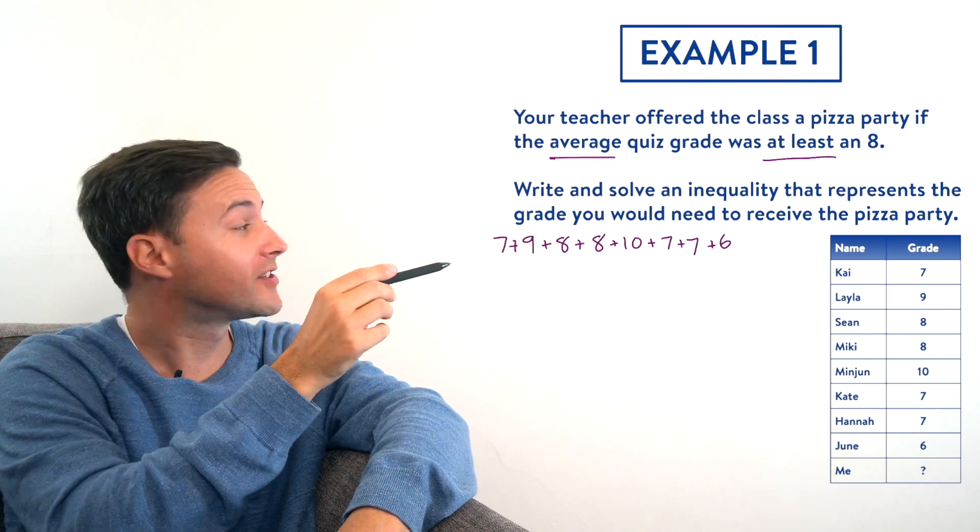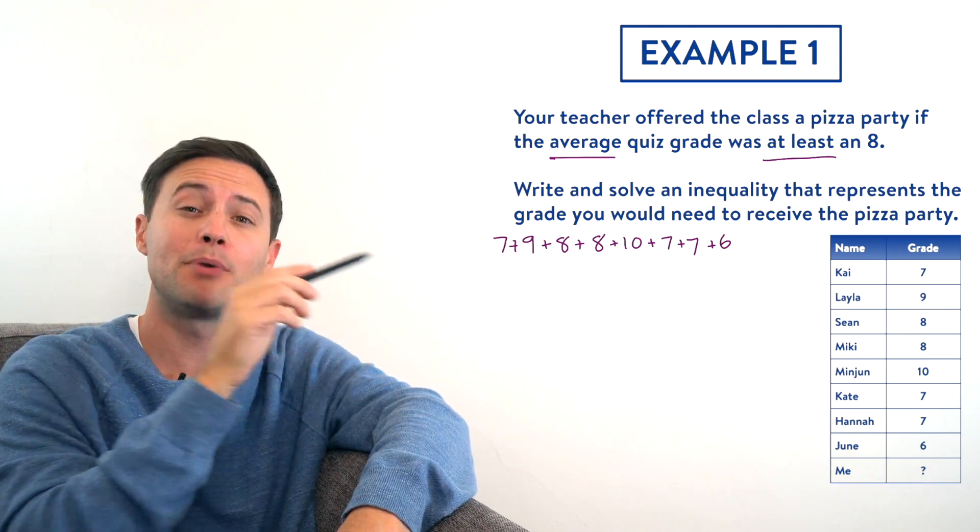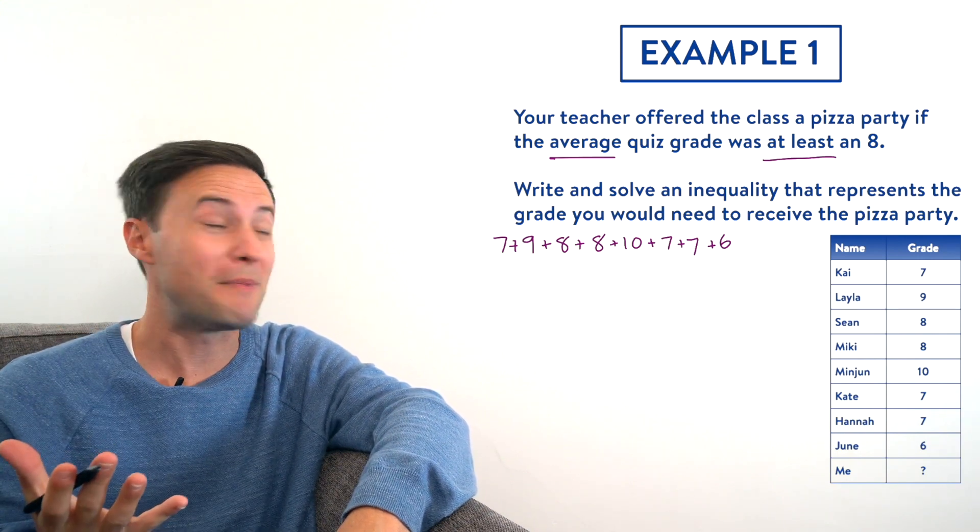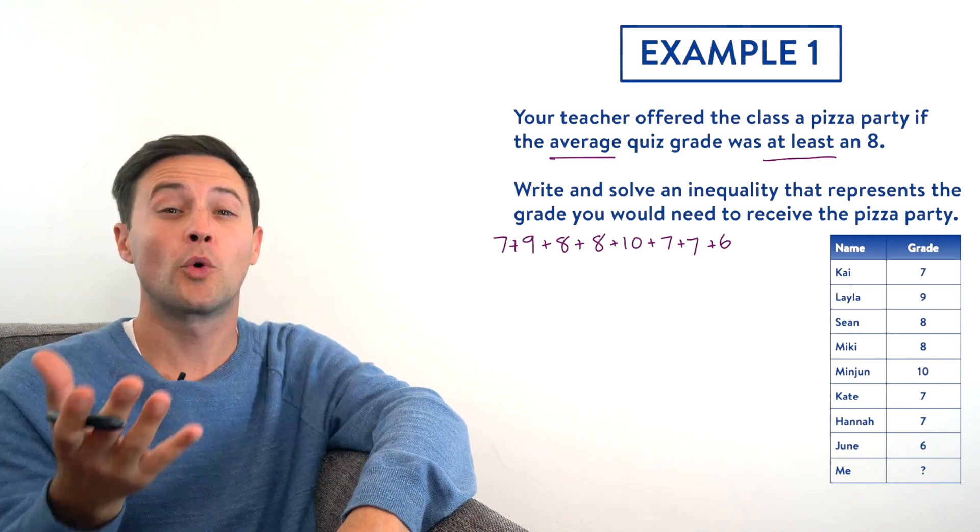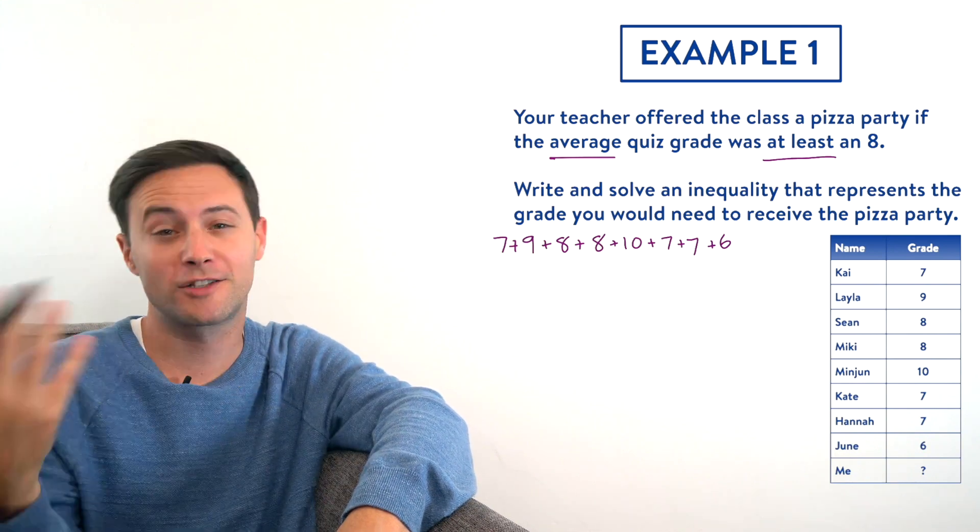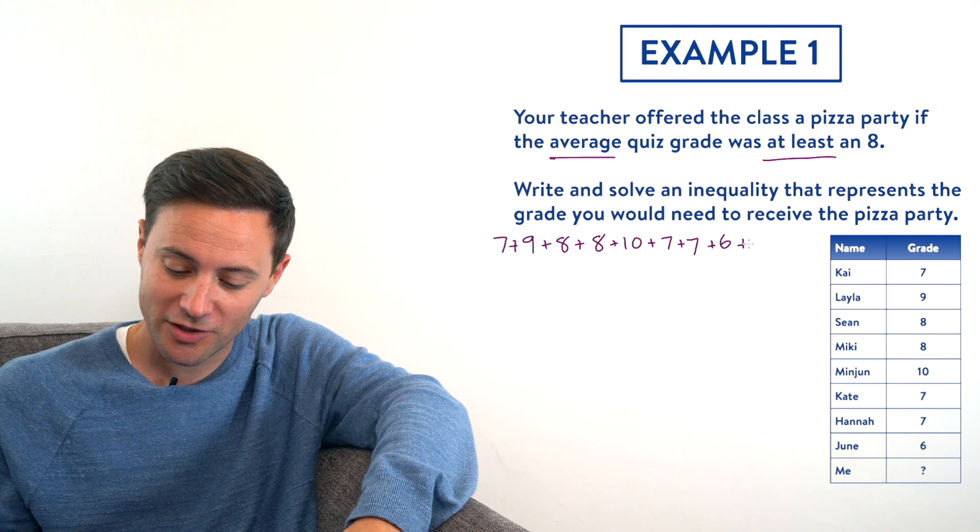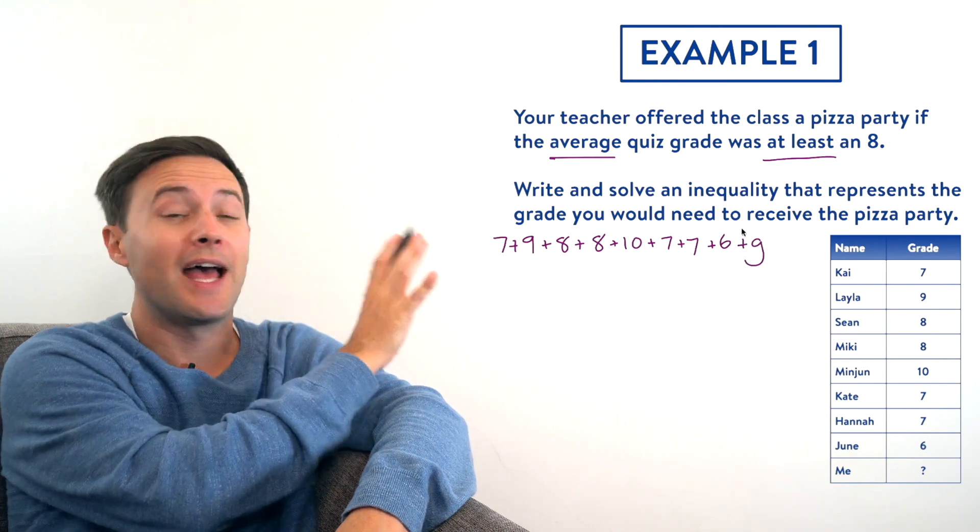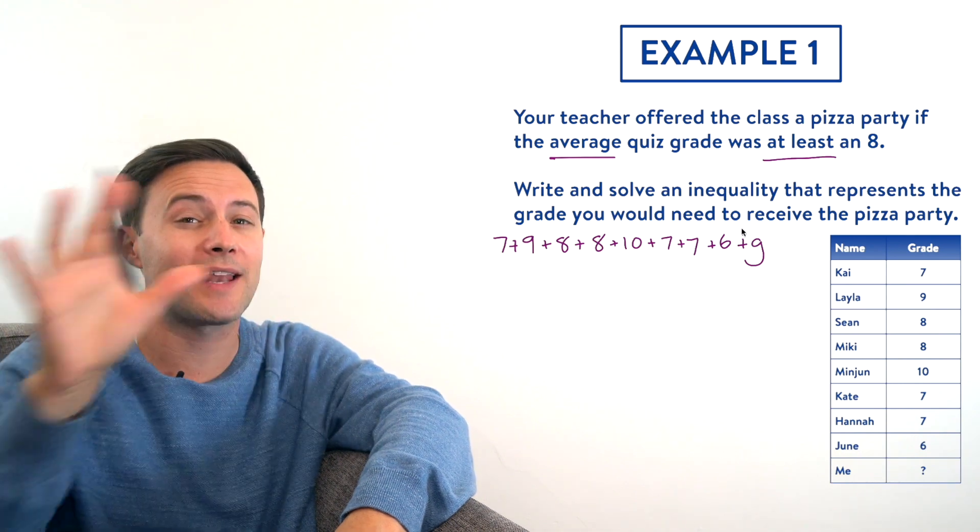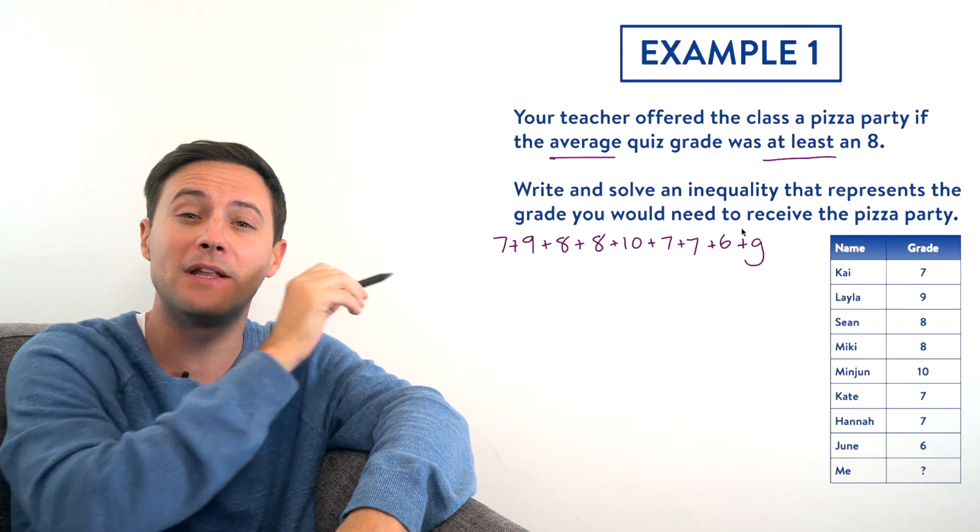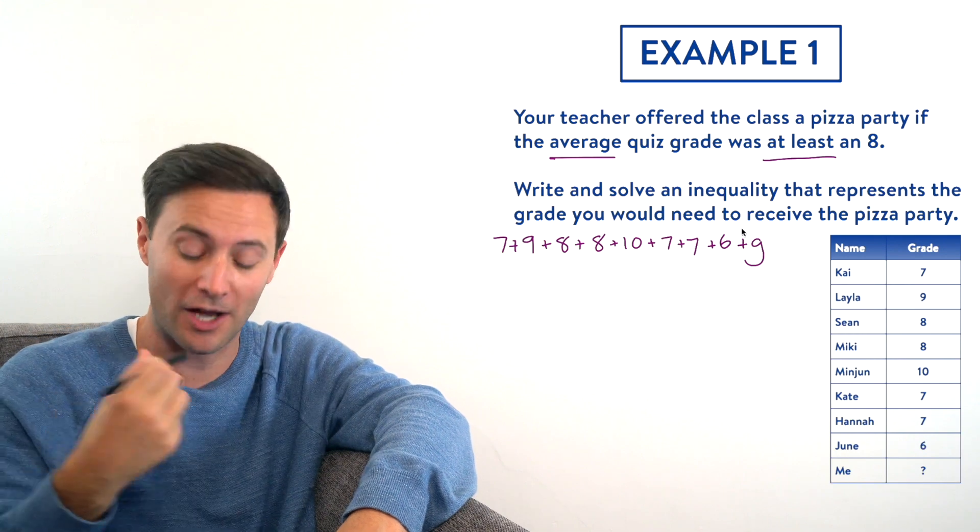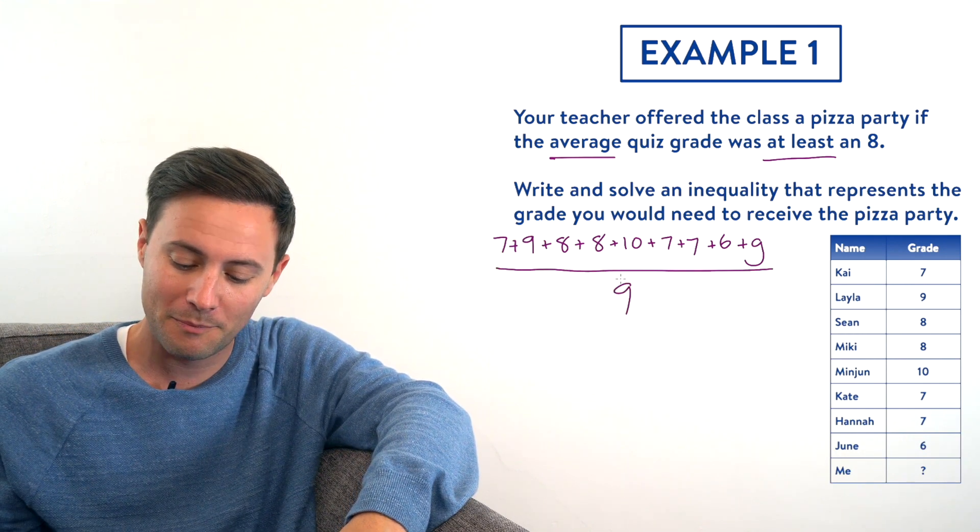As you can see, I've already started to add up all the other students' grades, but we also need to include my grade in the average. But we don't know what my grade is—that's what we're trying to figure out. When we have an unknown, we make that our variable, and if it's going to represent my grade, let's call it G. We're going to add plus G at the end. That's the first step when you're finding an average, but then once you add everything together, you need to divide by how many values there are. There are nine students in the class if you count including myself, so we need to divide all of that by nine.